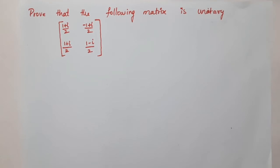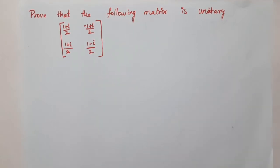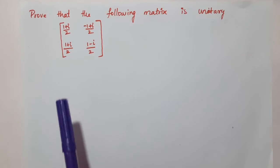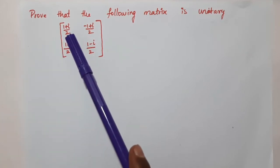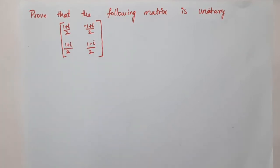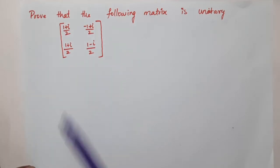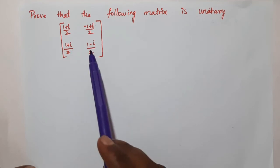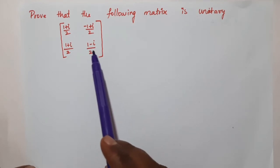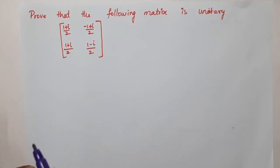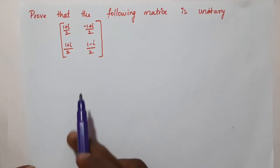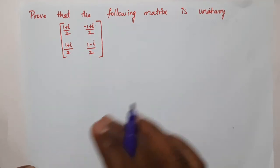Hello and welcome. Prove that the following matrix is unitary: (1+i)/2, (-1+i)/√2, (1+i)/2, (1-i)/2. The given 2×2 matrix is to be proved unitary.